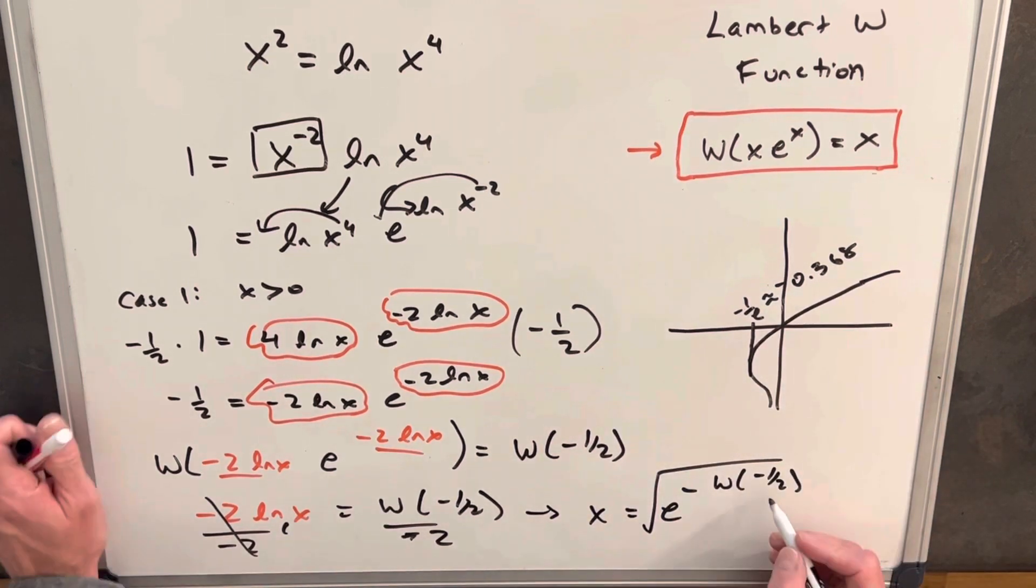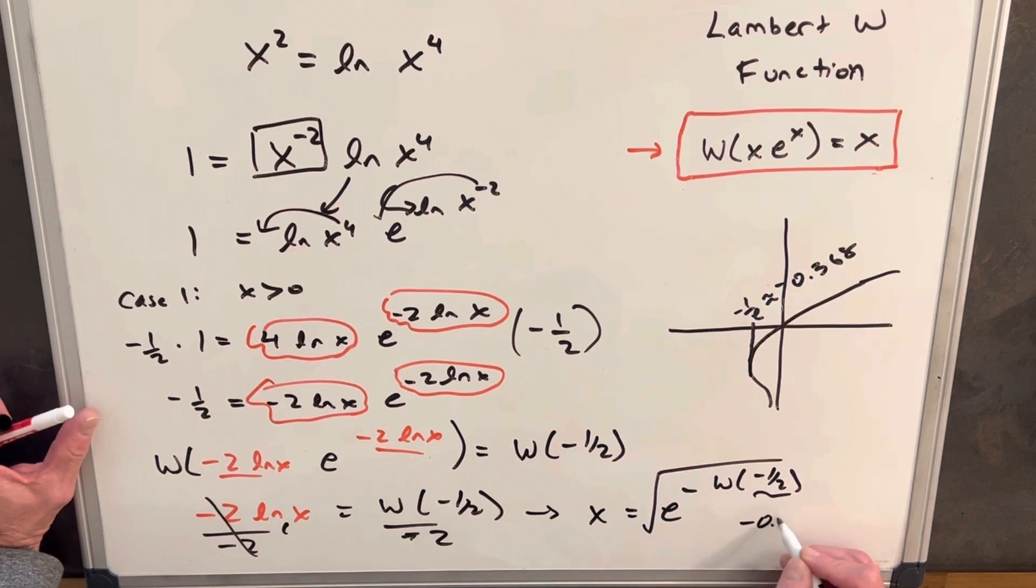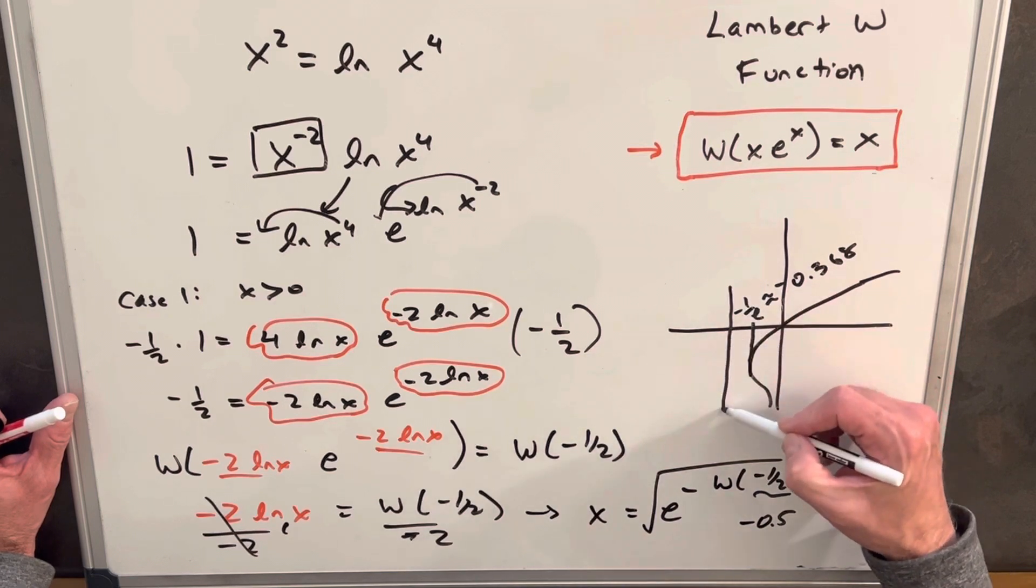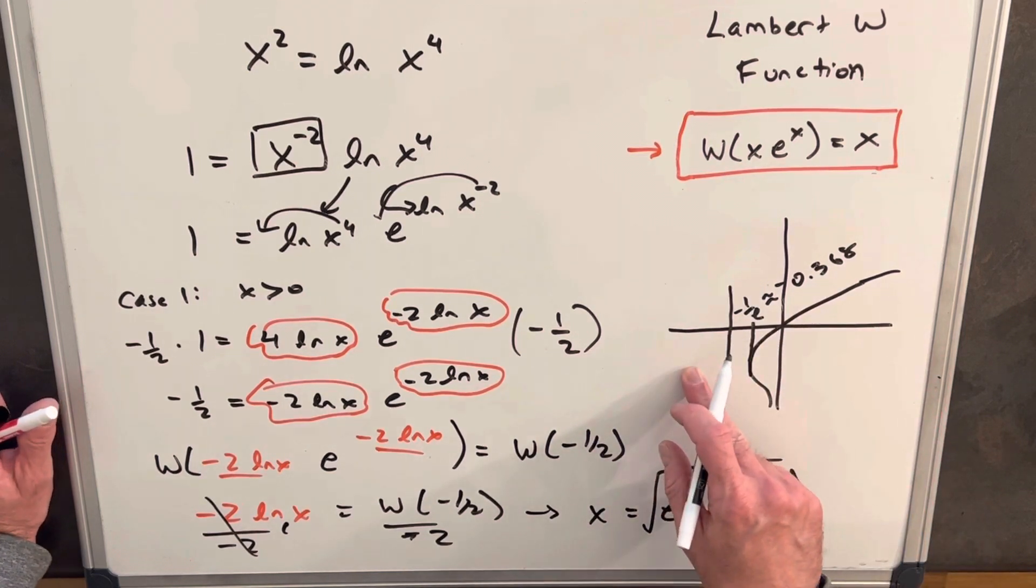The problem here is minus 1/2 is minus 0.5. So this value we're trying to plug in to the Lambert W function is somewhere in here, and all these values out here are complex.